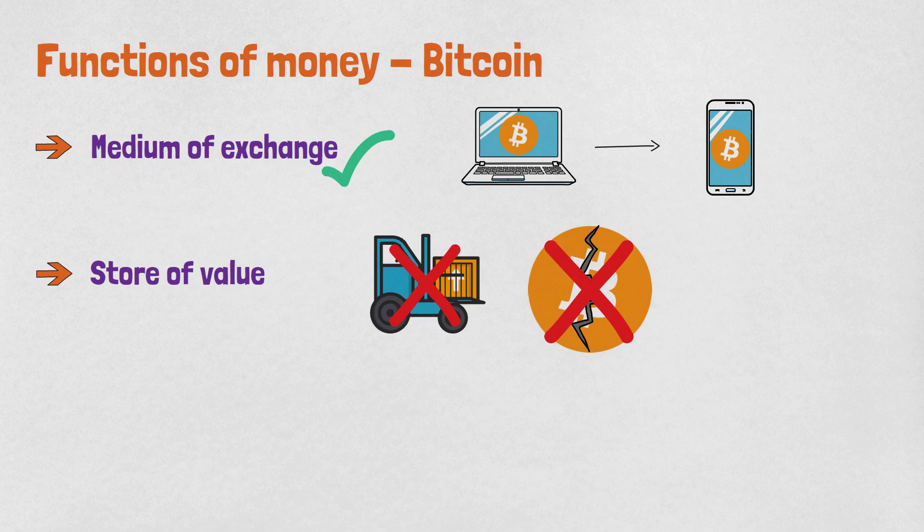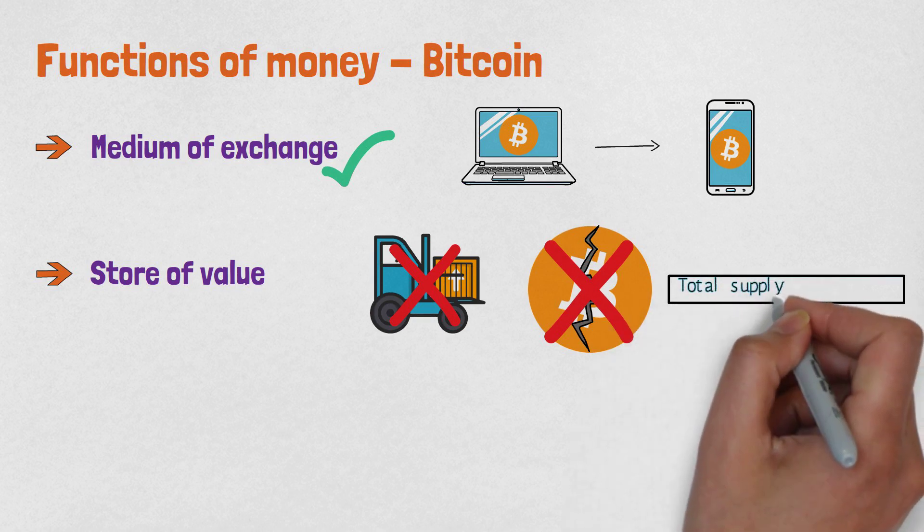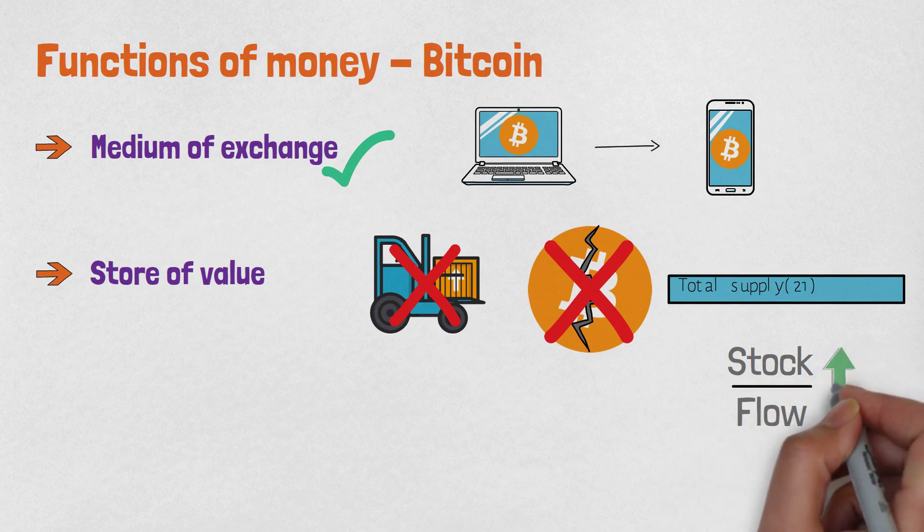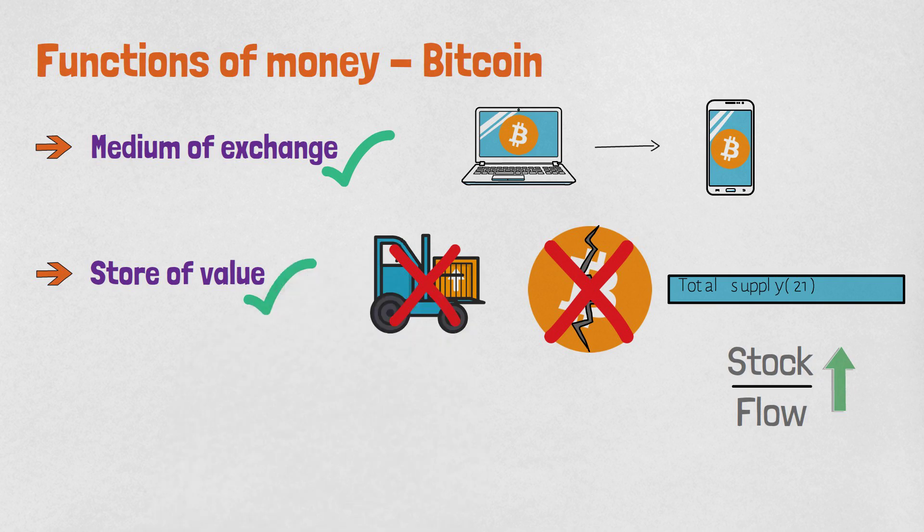One of the most important characteristics of Bitcoin is that it has a limited supply. There will only be 21 million Bitcoin in existence and there cannot be more of it created. Its stock-to-flow ratio is very high and very predictable. Bitcoin is a true sound money because it cannot be controlled or manipulated.